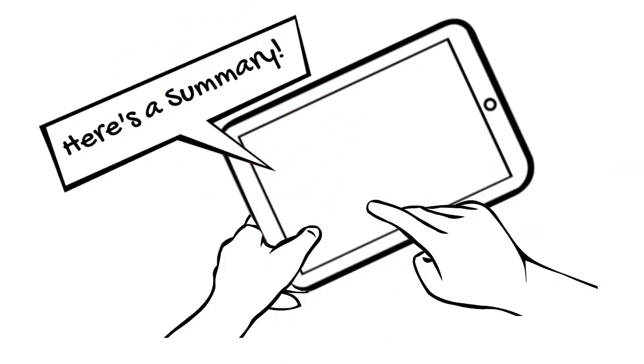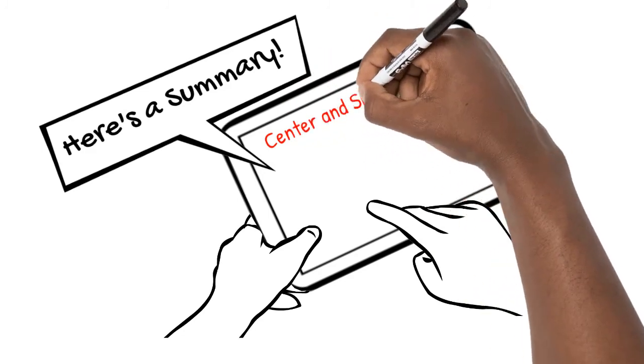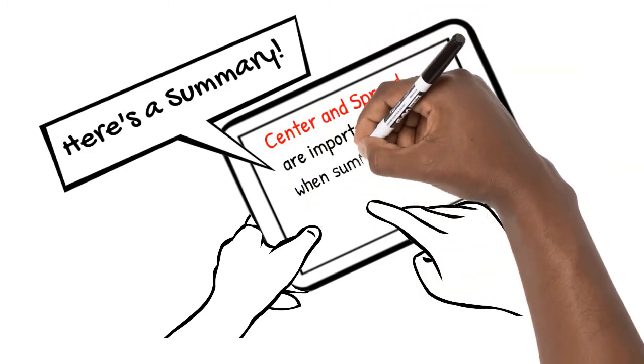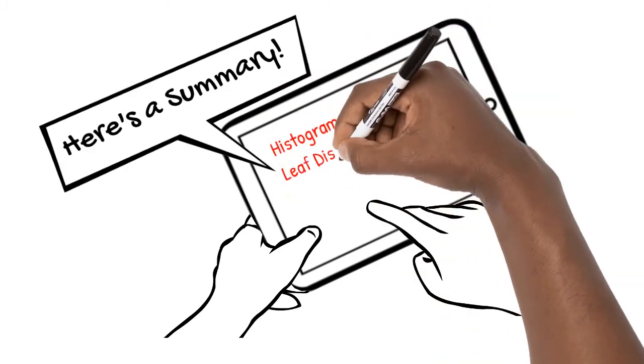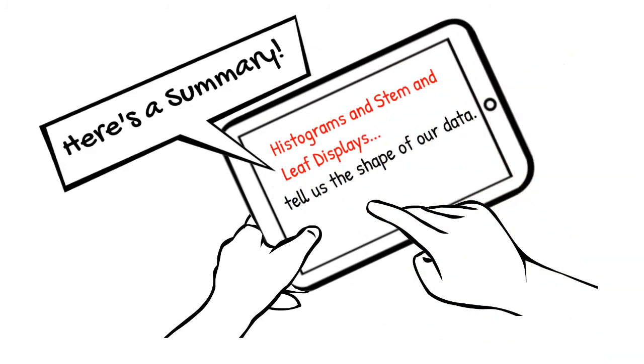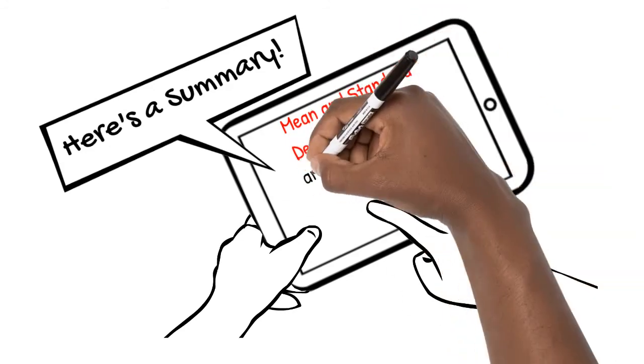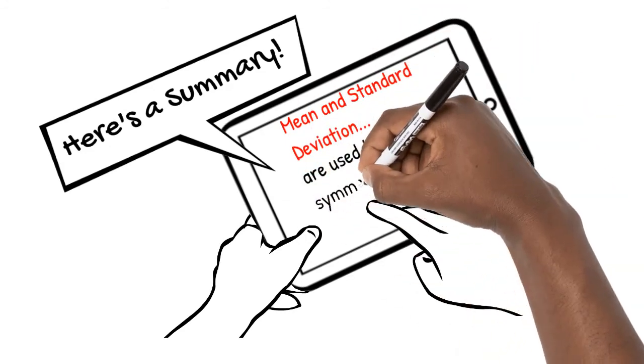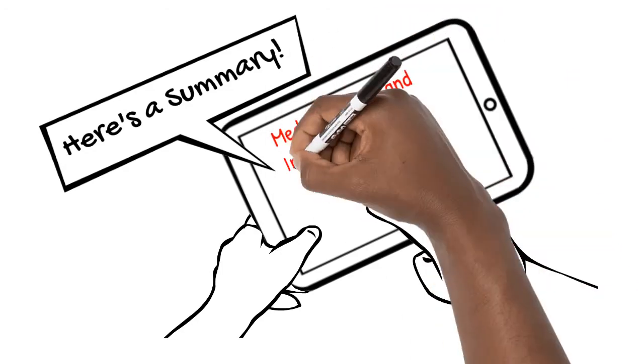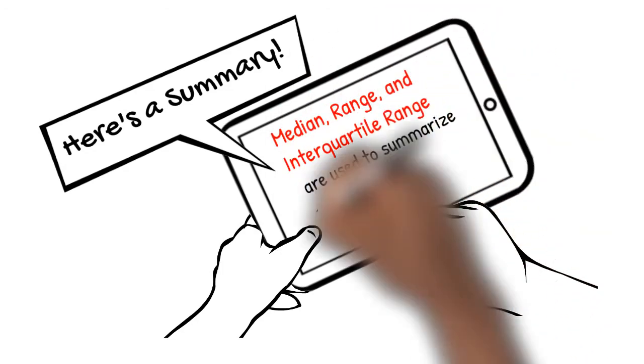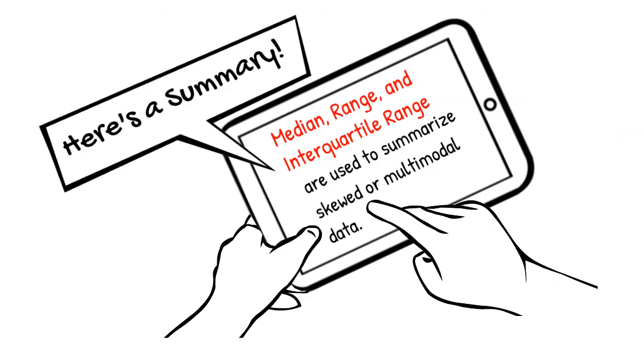Here's a summary of what we've learned in this video. Center and spread are important to address when summarizing quantitative data. Histograms and stem and leaf displays tell us the shape of our data. Mean and standard deviation are used to summarize symmetric unimodal data. Median, range, and interquartile range are used to summarize skewed or multimodal data.